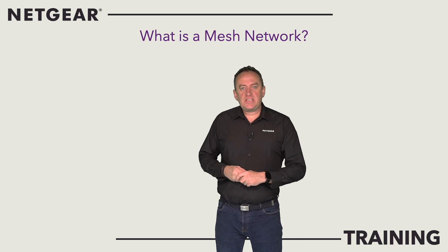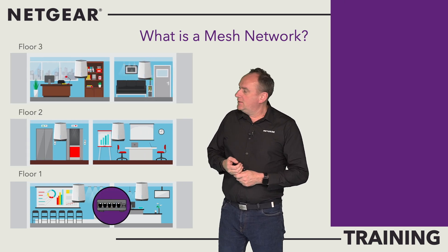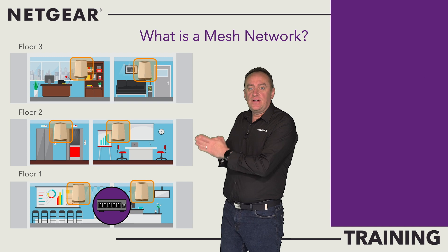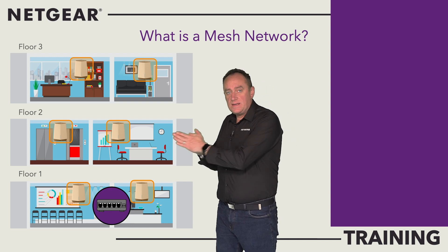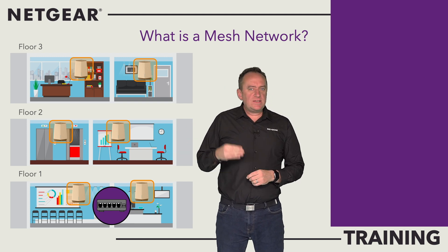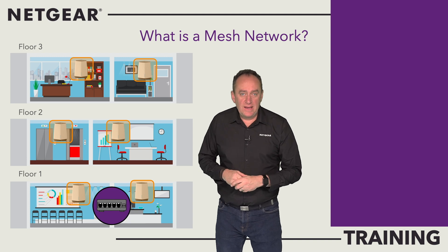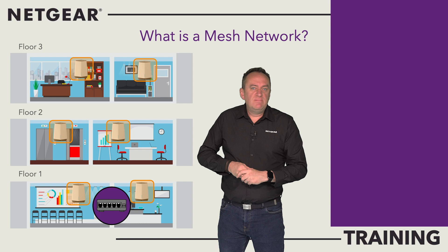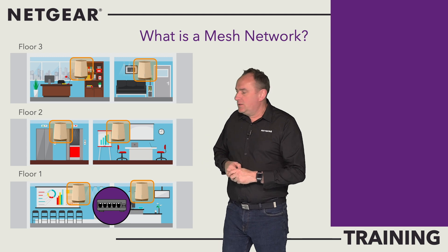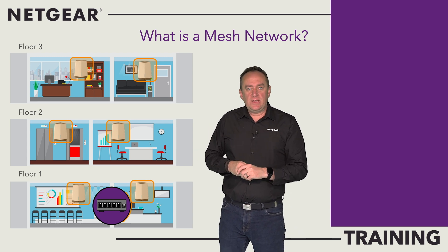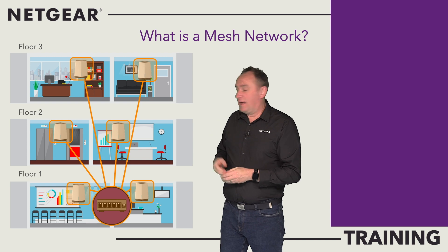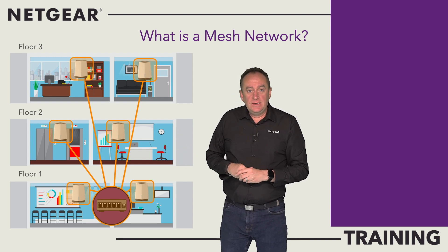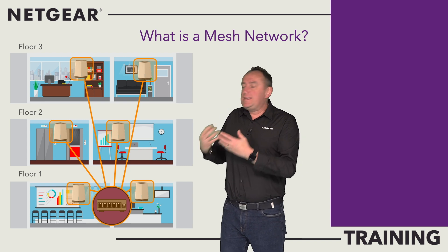Let's begin by explaining how a mesh network works. A wireless access point is a piece of network equipment that enables you to connect devices with Wi-Fi to your wired network. It's a device that creates a wireless local area network, usually in an office, a store, a restaurant, or any large building. In a typical installation, an access point connects to the network — a wired router or a switch — via an Ethernet cable, and then sends a Wi-Fi signal to a designated area.